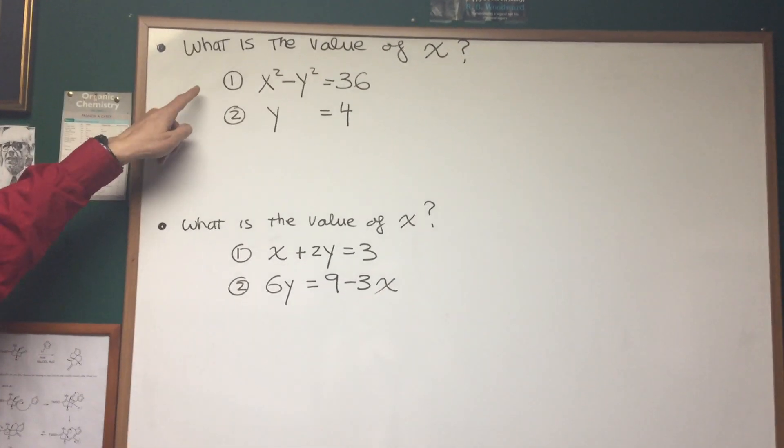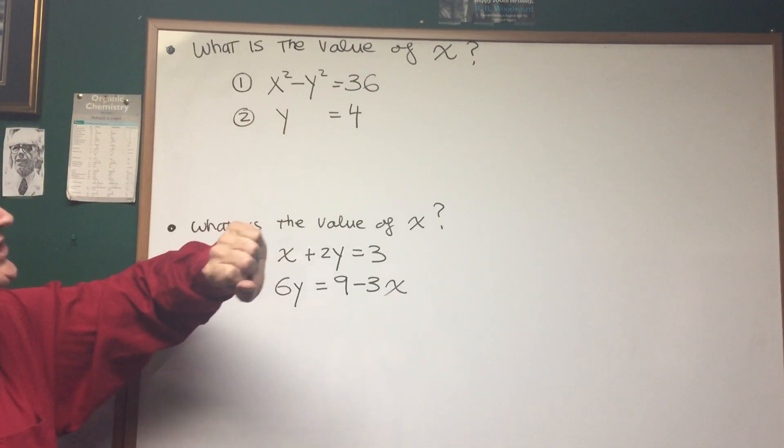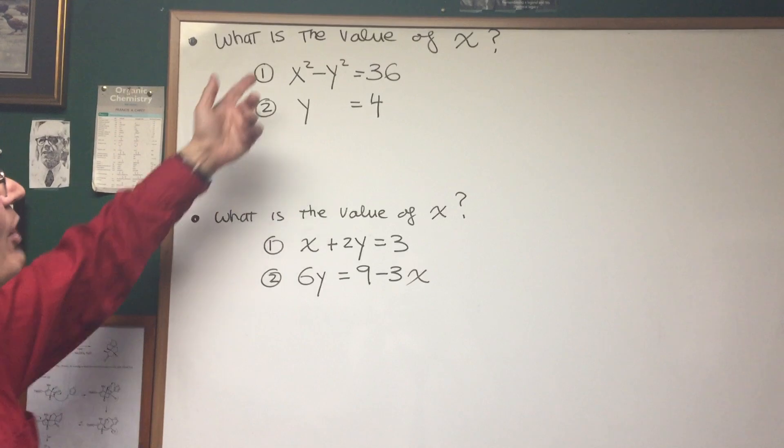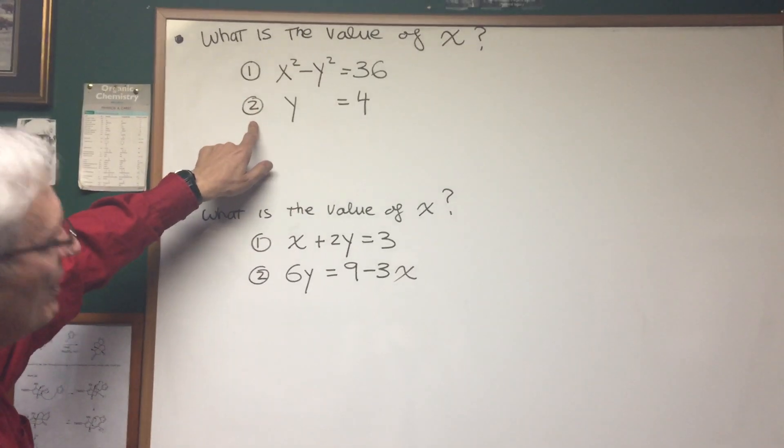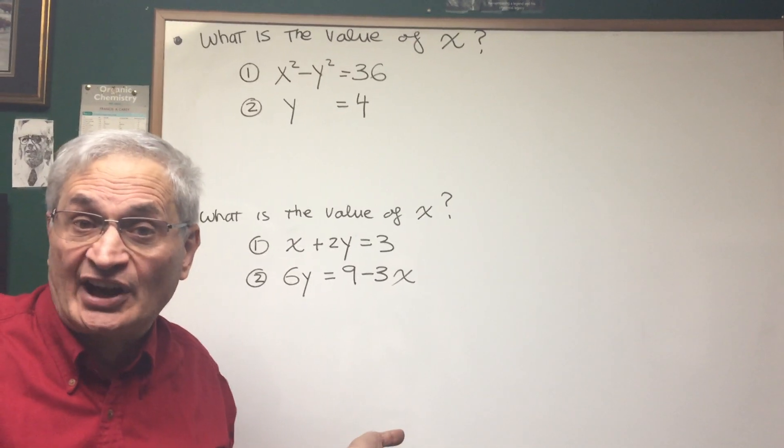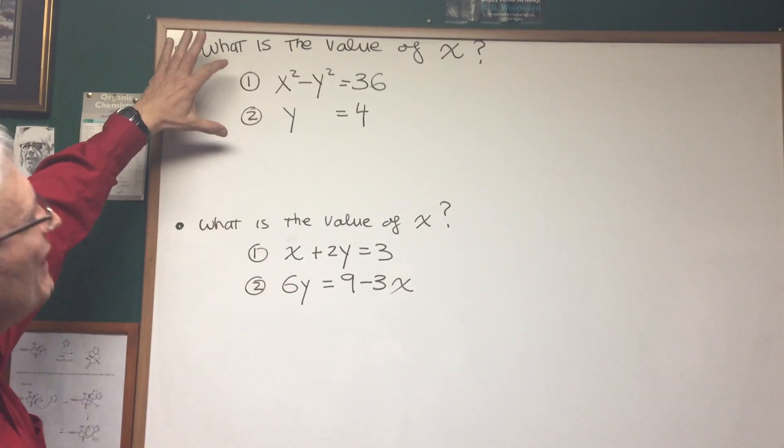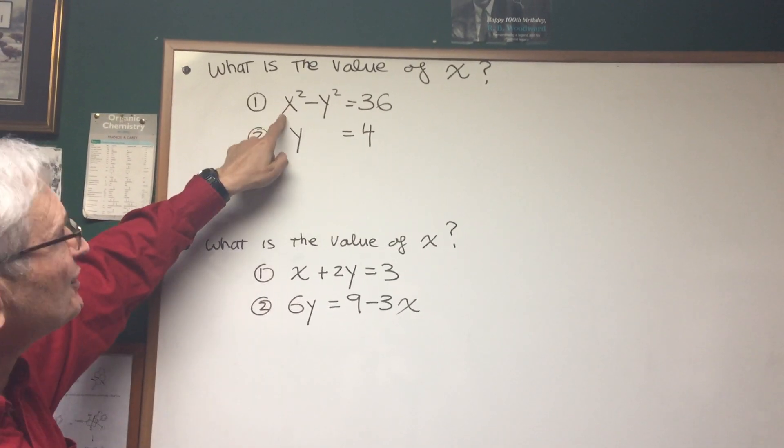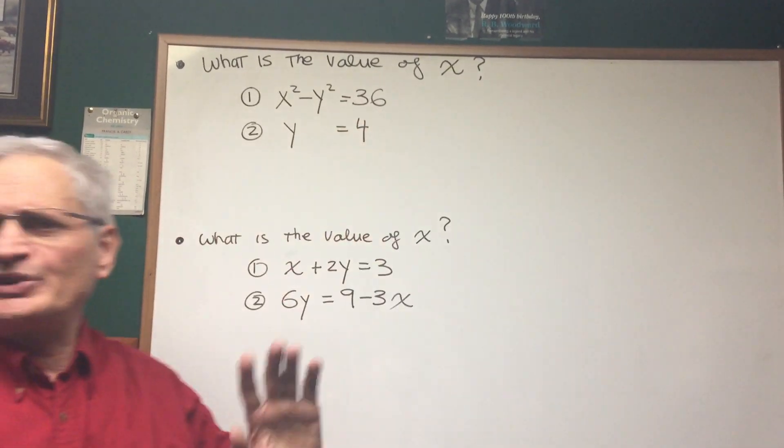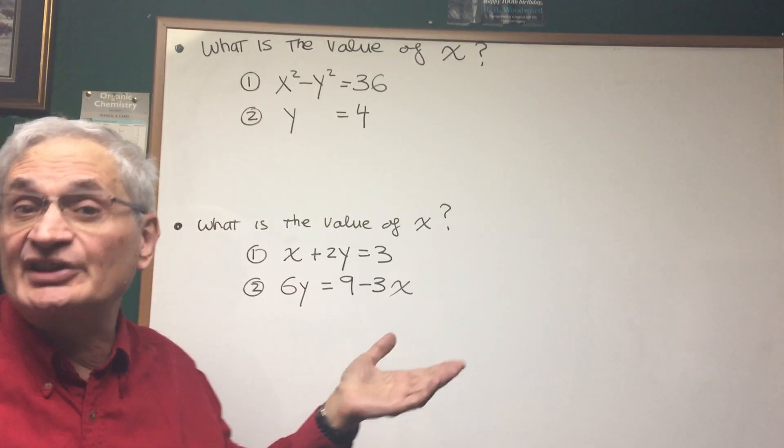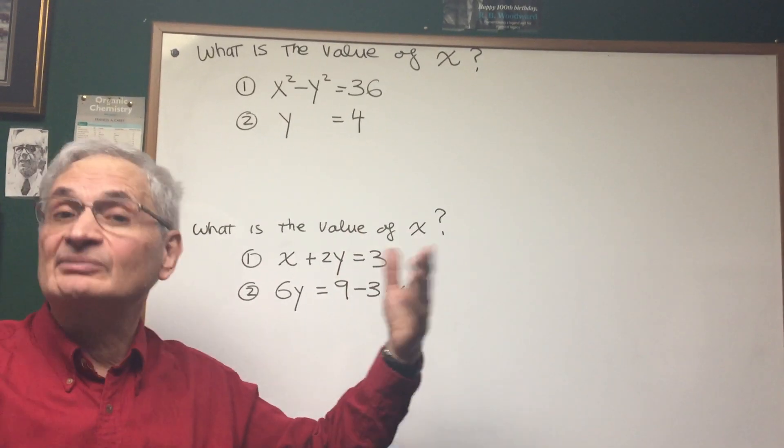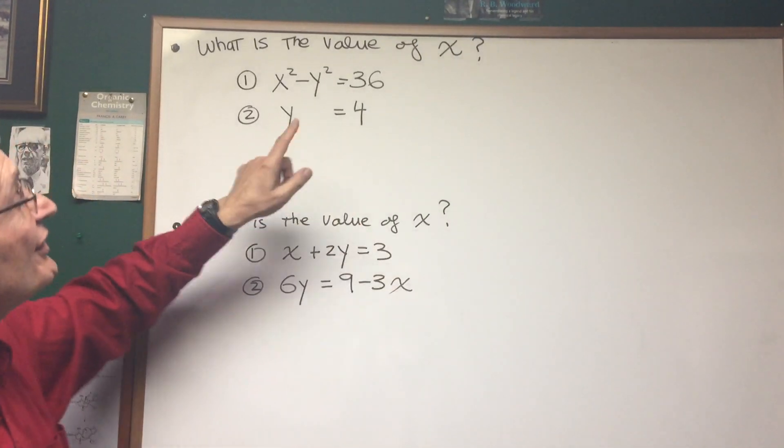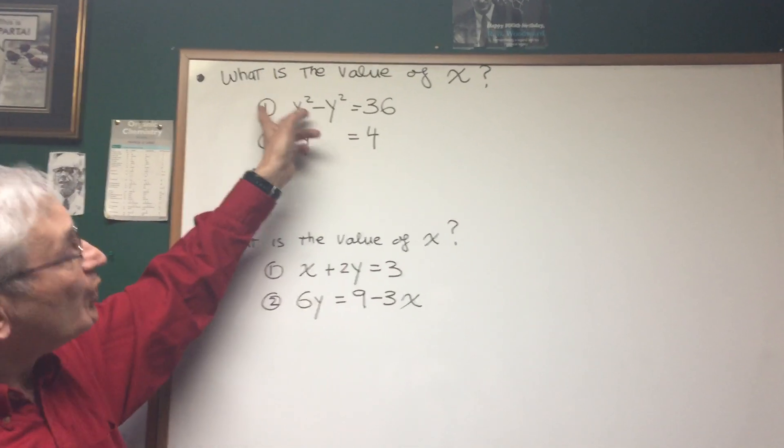I think you can see that taken on its own, x squared minus y squared equals 36, it's not sufficient to answer the question. There's two variables there, only one equation. Statement 2 makes a statement about y. That's not sufficient to answer the question about x. But notice, if we take the two statements together, y is equal to 4, we plug that into the first statement, x squared minus 4 squared is 36. We see that x is completely solvable. So the answer to this is part C. Both statements 1 and 2 together are necessary and sufficient to answer the question.